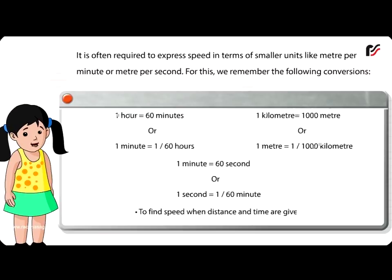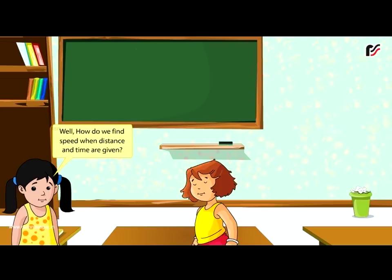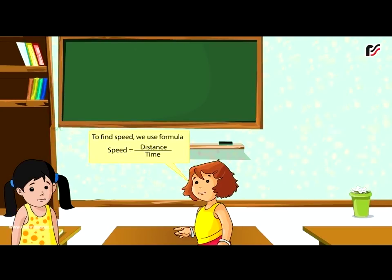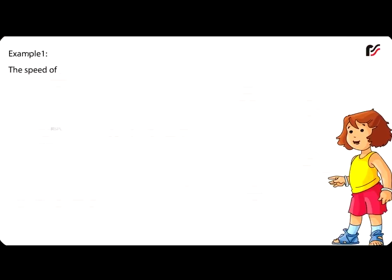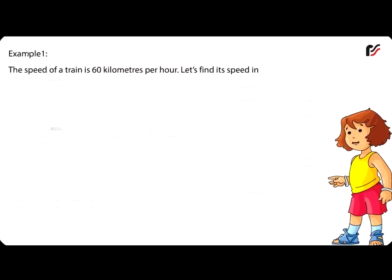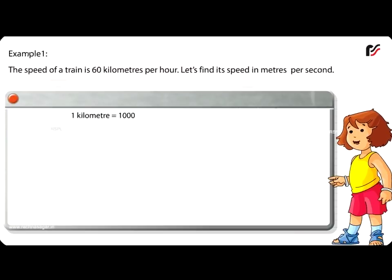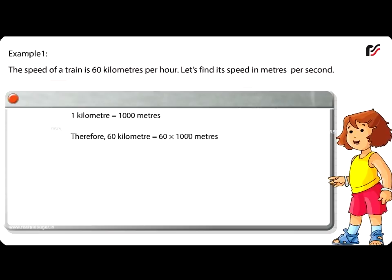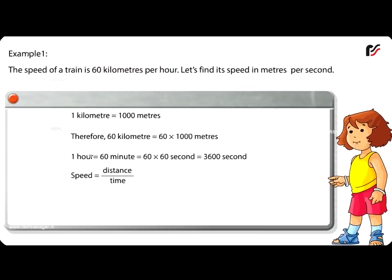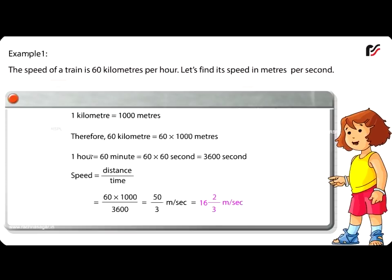To Find Speed When Distance and Time Are Given: We use the formula: Speed equals distance divided by time. The speed of a train is 60 km/h. Let's find its speed in metres per second. Since 1 kilometre equals 1000 metres, 60 kilometres equals 60 multiplied by 1000 metres. And 1 hour equals 60 minutes equals 3600 seconds. Therefore, speed equals 60 multiplied by 1000 divided by 3600, which equals 50/3 metres per second, or 16⅔ metres per second.